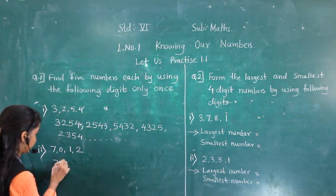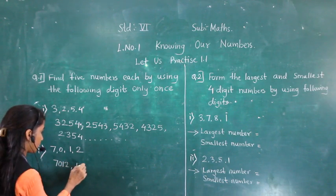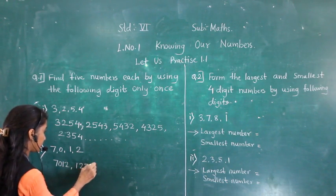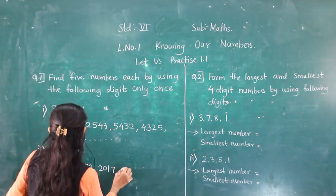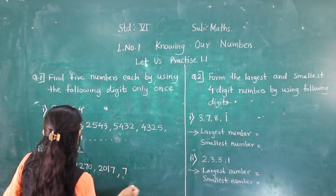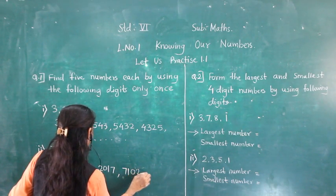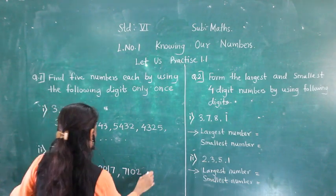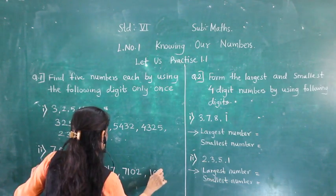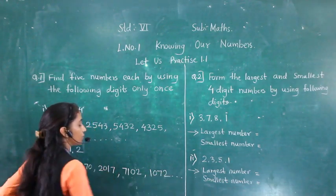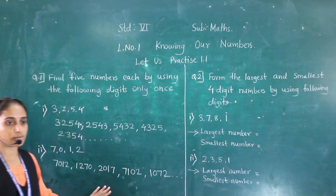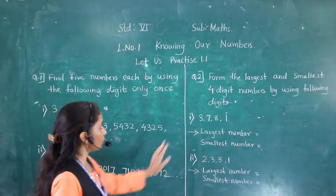For the next set of digits, some possible numbers are: 7012, 1270, 2000, and 2070. This way we can form several numbers using the given digits.